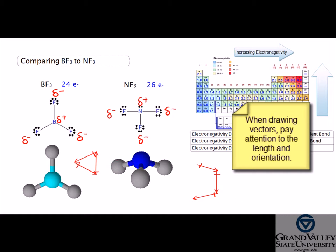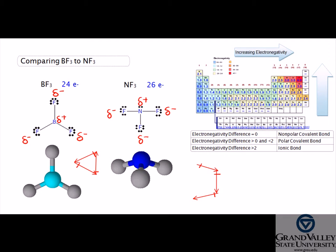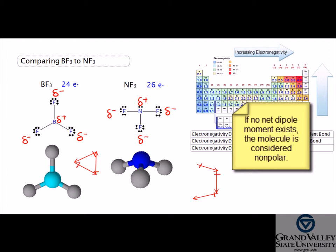If the head of the final vector is located at the tail of the first, then no net dipole moment exists and the molecule is considered nonpolar. As the bond dipole moments cancel, BF₃ is nonpolar.